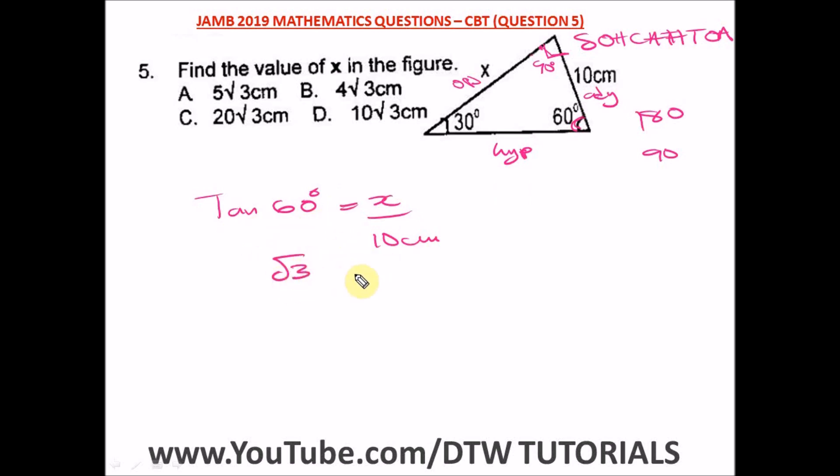So tan 60 is root 3. So root 3 equals x divided by 10 centimeters, and the value for x - we just cross multiply - x equals 10 root 3 centimeters. So this is the value for x, and our correct option here is option D.